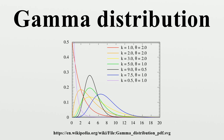Tweedie distributions: the gamma distribution is a member of the family of Tweedie exponential dispersion models. Applications: the gamma distribution has been used to model the size of insurance claims and rainfalls, meaning that aggregate insurance claims and rainfall accumulated in a reservoir are modeled by a gamma process. The gamma distribution is also used to model errors in multi-level Poisson regression models, because the combination of the Poisson distribution and a gamma distribution is a negative binomial distribution. In wireless communication, the gamma distribution is used to model the multipath fading of signal power.